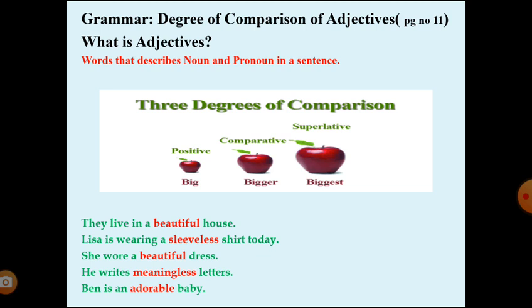Page number 11. First of all we will see what is an adjective. Last year we learned parts of speech, and adjective is the fourth part of speech. Words that describe noun and pronoun in a sentence are called adjectives. A noun is a naming word — it is the name of a person, an animal, a thing, an idea or a process.